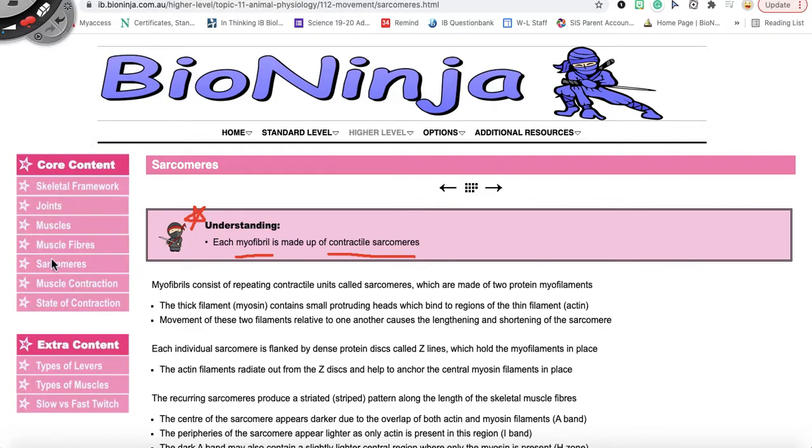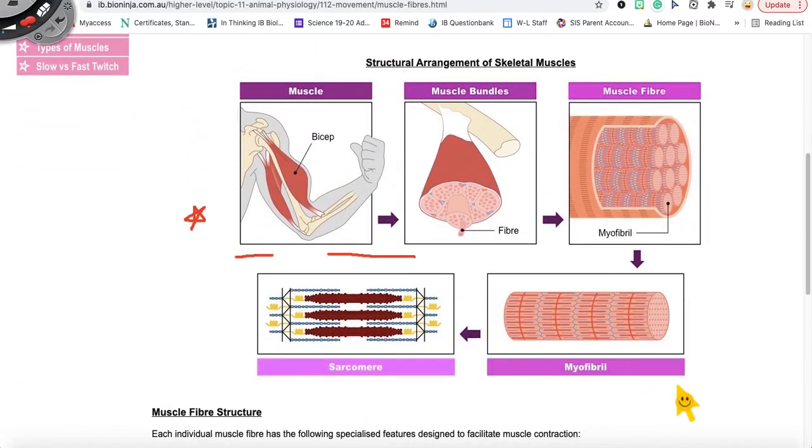If you remember from the previous video, we looked at the myofibril structure right here and we saw how the myofibril structure was made up of contractile units called the sarcomere.